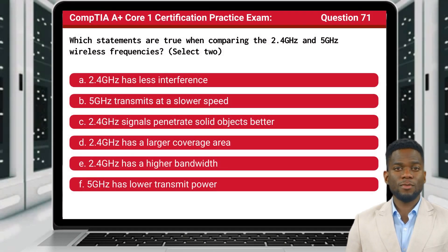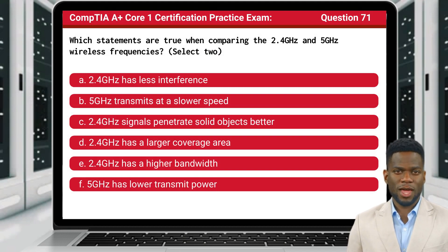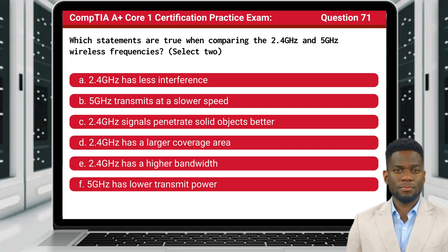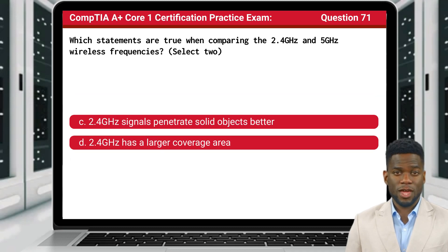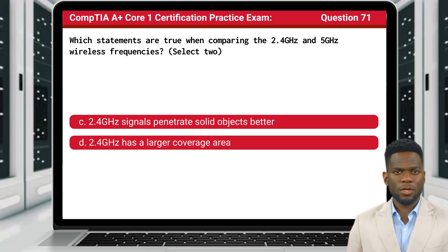Question 71. Which statements are true when comparing the 2.4 GHz and 5 GHz wireless frequencies? Select 2. The answer is C and D: 2.4 GHz signals penetrate solid objects better, and 2.4 GHz has a larger coverage area.